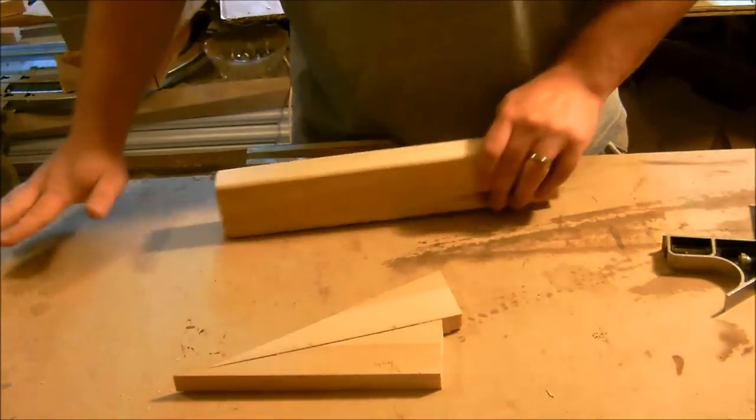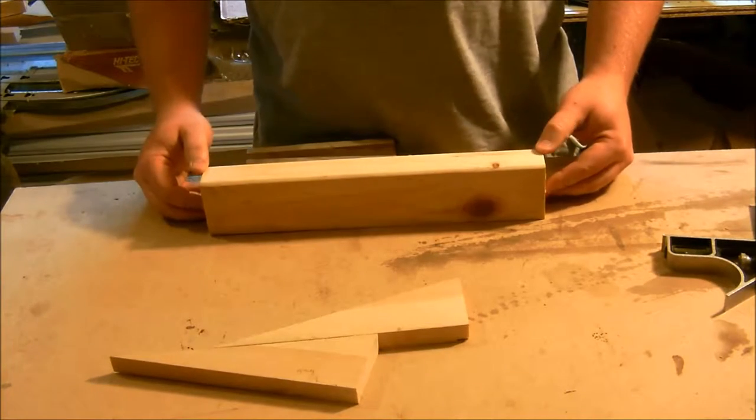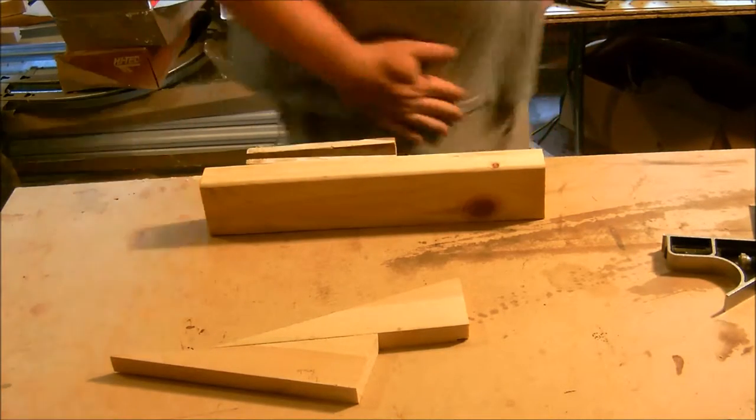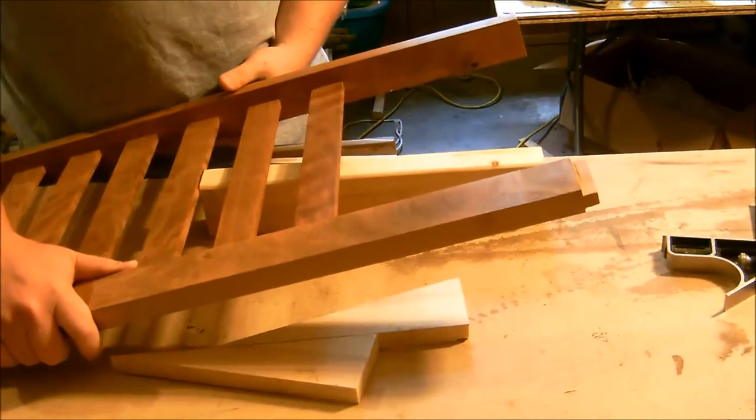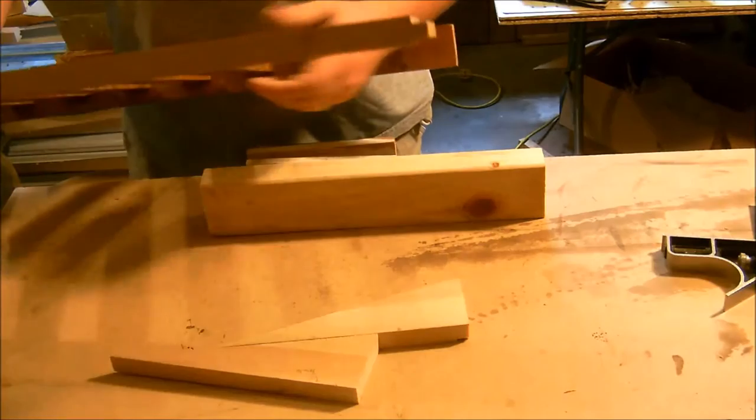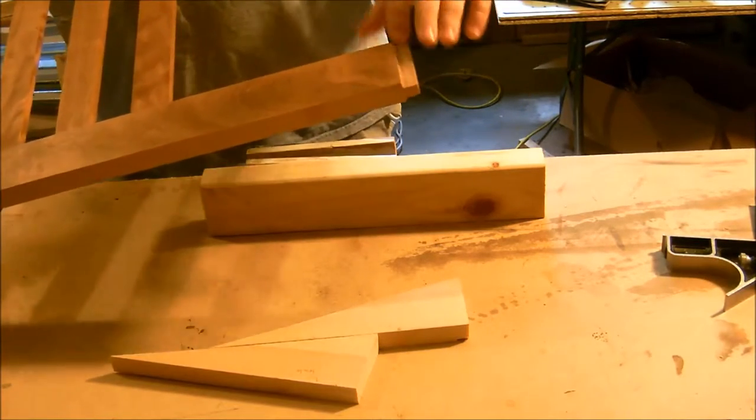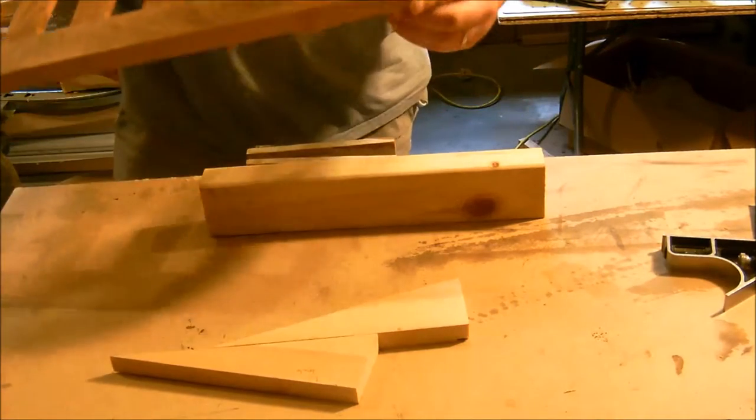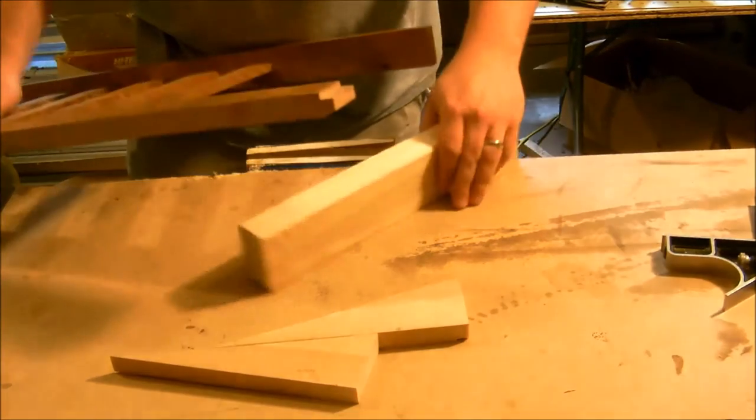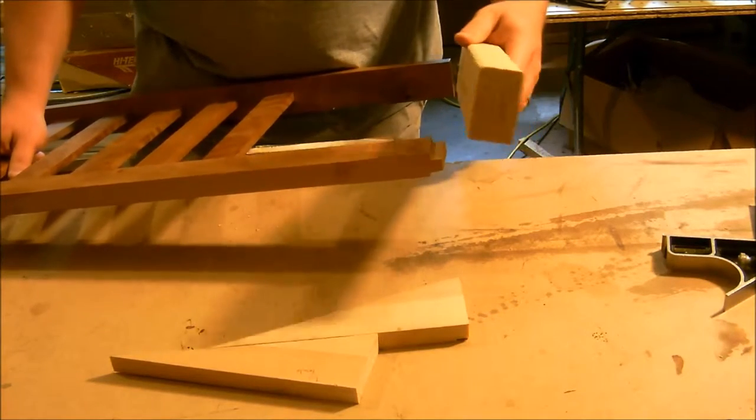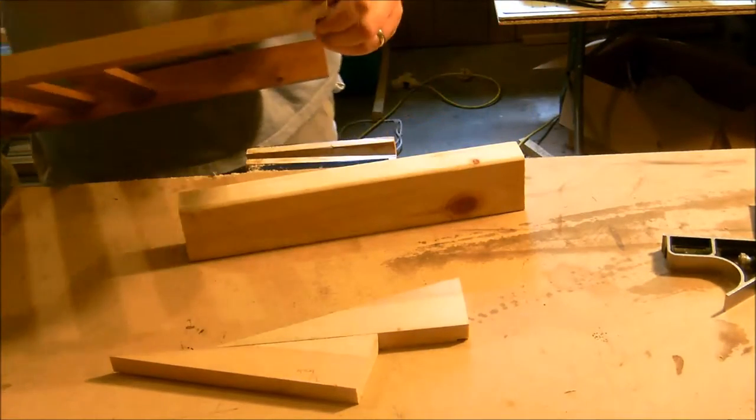All right, so today we're actually going to be making a rabbet plane, which is used for cleaning up woodworking joints. Here's the top piece of a headboard I've been working on, and this joint right here was cut by hand. After you've made your cuts with the chisel or saw, sometimes you need to clean that up, smooth it out, maybe get it down to the thickness that you need. That's where a rabbet plane comes into play. Once we have it set up, we'll be able to cut down the length of that joint and clean it up so it fits better together.